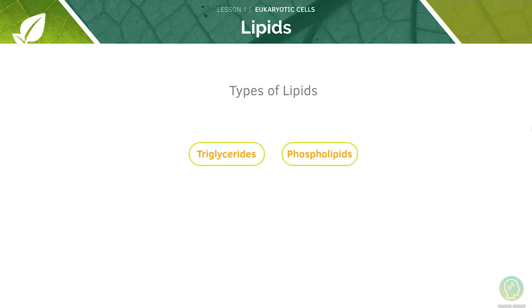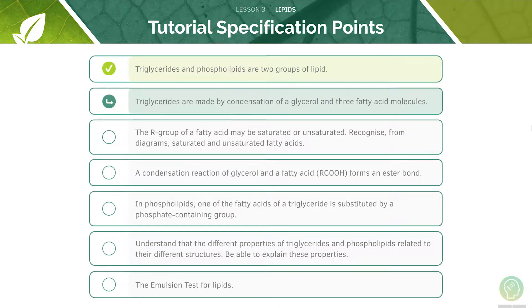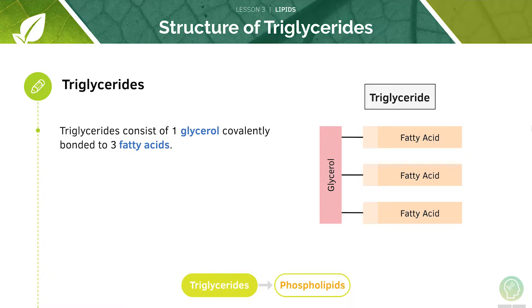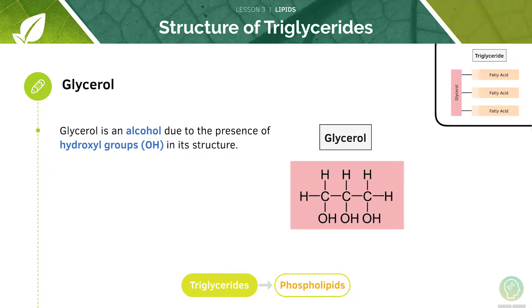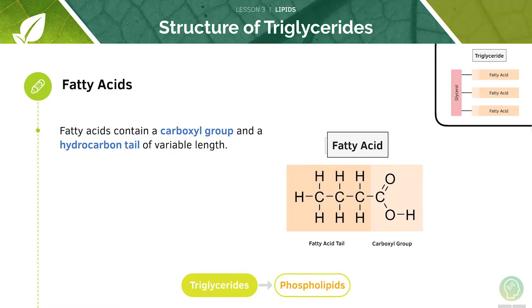There will be two types of lipids we are going to cover in this video. Next, we will look at triglyceride formation. Triglycerides are special cases of lipids which consist of one molecule of glycerol, covalently bonded to three molecules of fatty acids. Glycerol is a type of organic molecule referred to as an alcohol because of its presence of hydroxyl groups in its structure. Fatty acids contain a carboxyl group and a hydrocarbon tail, and they are highly hydrophobic and insoluble in water.